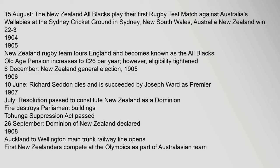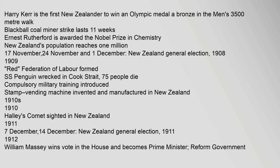1908: Auckland to Wellington Main Trunk Railway Line opens. First New Zealanders compete at the Olympics as part of the Australasian team. Harry Kerr is the first New Zealander to win an Olympic medal — bronze in the men's 3,500 m walk. Blackball coal miners' strike lasts 11 weeks. Ernest Rutherford awarded the Nobel Prize in Chemistry. New Zealand's population reaches 1 million. 17 November, 24 November and 1 December: New Zealand general election. 1908–1909: Federation of Labour formed. SS Penguin wrecked in Cook Strait, 75 people die. Compulsory military training introduced.